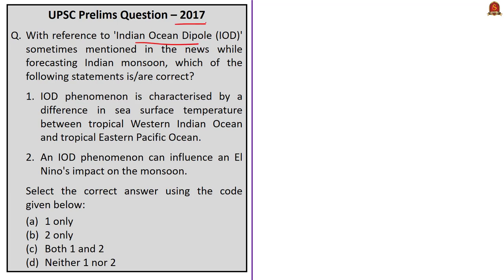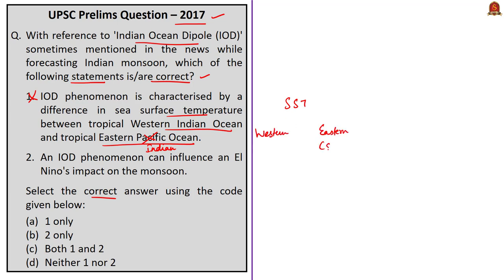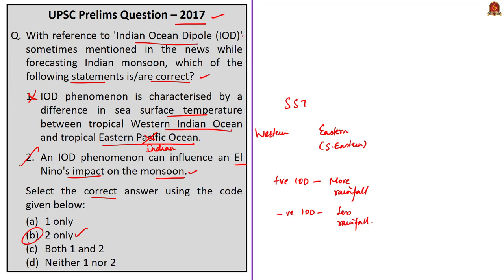Looking at a 2017 prelims question about Indian Ocean Dipole: the first statement is incorrect because it says IOD is characterized by a difference in sea surface temperatures between the tropical western Indian Ocean and the tropical eastern Pacific Ocean — it should be the eastern Indian Ocean, specifically the southeastern Indian Ocean. The second statement is correct: an IOD phenomenon can influence El Niño's impact on the monsoon, because a positive IOD leads to greater monsoonal rainfall and a more active monsoon, whereas a negative IOD leads to less rainfall. So the correct answer is option B — statement 2 only.